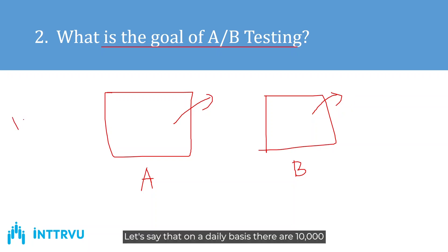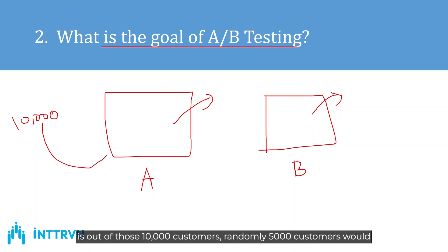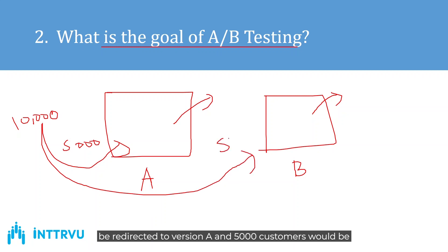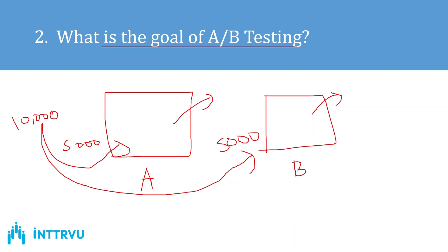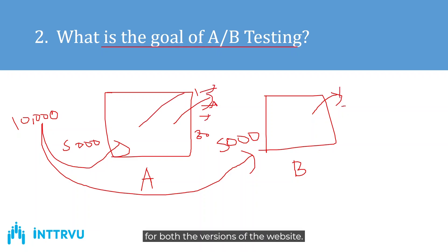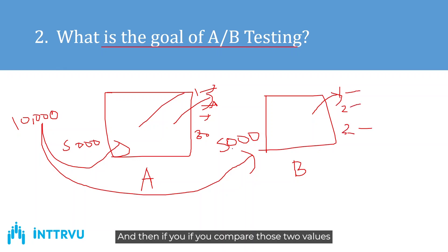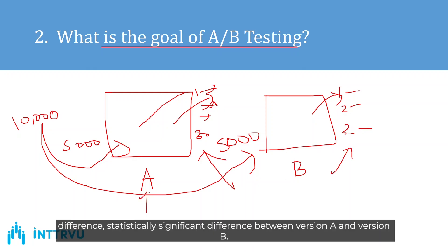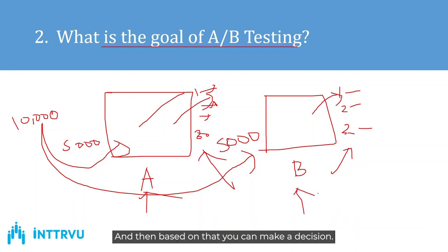Let's say there are 10,000 customers visiting the website daily. In A/B testing, out of those 10,000 customers, randomly 5,000 would be redirected to version B. You do this daily for 30 days. Each day, a conversion rate is calculated for both versions. Comparing the means of those two values using a t-test tells you whether there is a statistically significant difference between version A and version B, and then you can make a decision based on that.